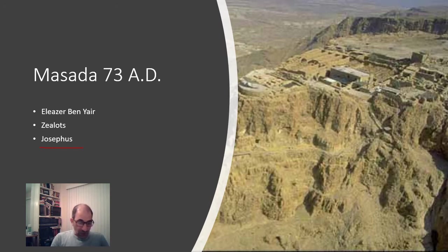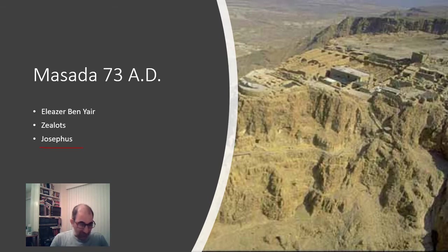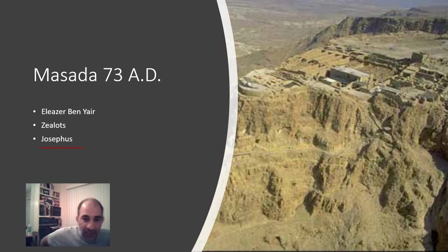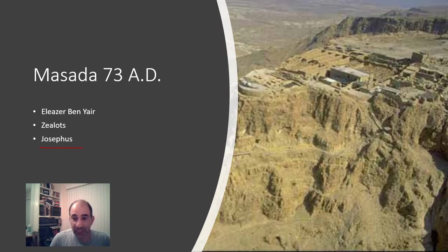Eliezer Ben Yair's speech: 'Since we long ago resolved never to be servants to the Romans, nor to any other than God himself, who alone is the true and just Lord of mankind, the time has now come that obliges us to make that resolution true in practice. We were the very first that revolted against Rome, and we are the last that fight against them. God has granted us that it is still in our power to die bravely in a state of freedom. Let our wives die before they are abused and our children before they have tasted slavery. And after they have slain them, let us bestow that glorious benefit upon one another mutually.' They all killed themselves rather than be enslaved by the Romans.